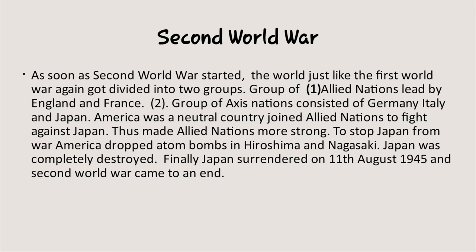During the Second World War, the world was again divided into two groups: Allied Nations and Axis Nations. Allied Nations were under the leadership of England and France. Axis Nations comprised Germany, Italy, and Japan. America was a neutral country, but when America's Navy was attacked at Pearl Harbor by Japan, America joined the side of the Allied Nations and started fighting against Japan, making the Allied Nations more powerful. To stop Japan, America dropped atom bombs on Hiroshima and Nagasaki on 6th August 1945. By 11th August 1945, Japan surrendered and the Second World War came to an end.